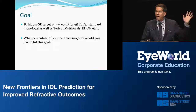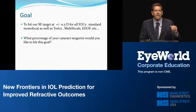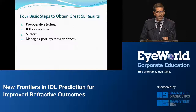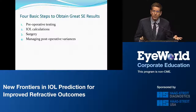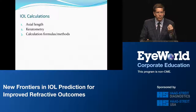I challenge you to know what your number is. We know there are four basic steps to obtaining great spherical equivalent results: preoperative testing, IOL calculations, the surgery itself, and managing postoperative variants. Today we're talking about IOL calculations, and within that, there are just three steps: axial length, keratometry, and the calculation formula or method.